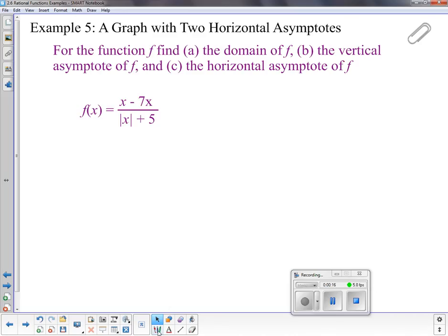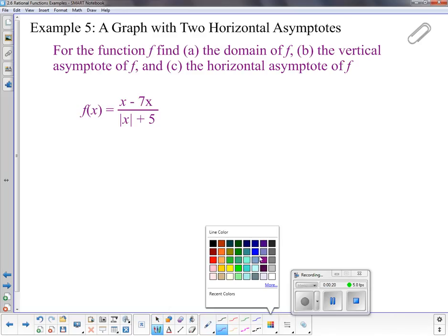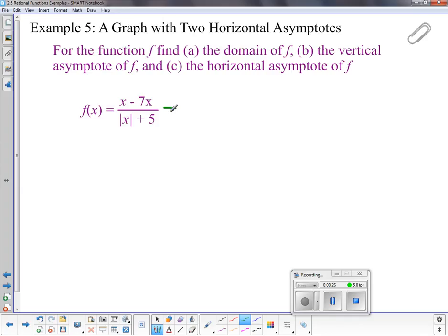So let's look at this. This function we need to simplify first. If we go in and look, we can simplify this by factoring the numerator a little bit, or just combining like terms, actually. Let's take a look at the like terms. There's x minus 7x is minus 6x.